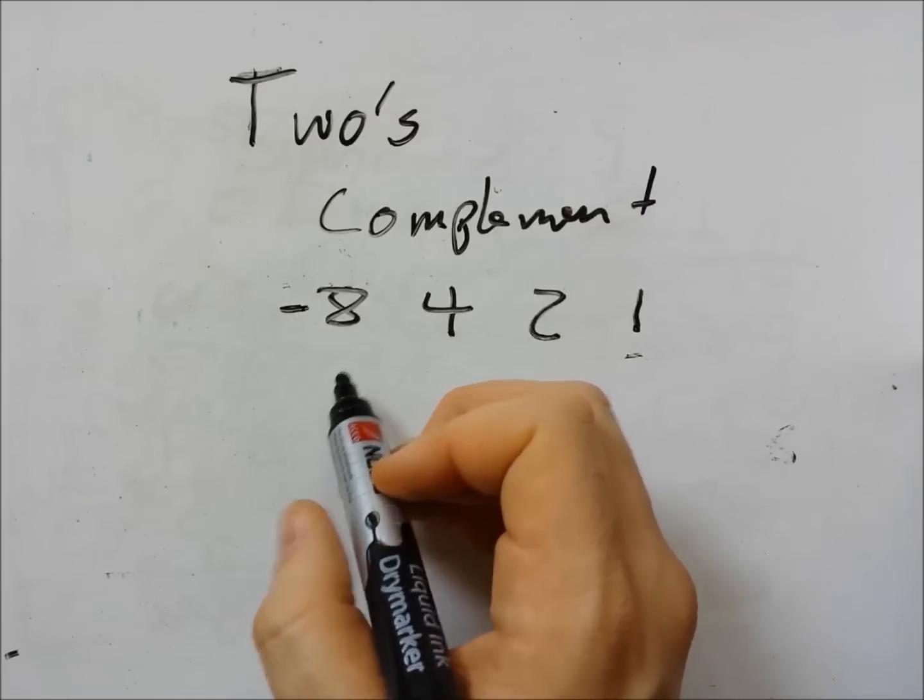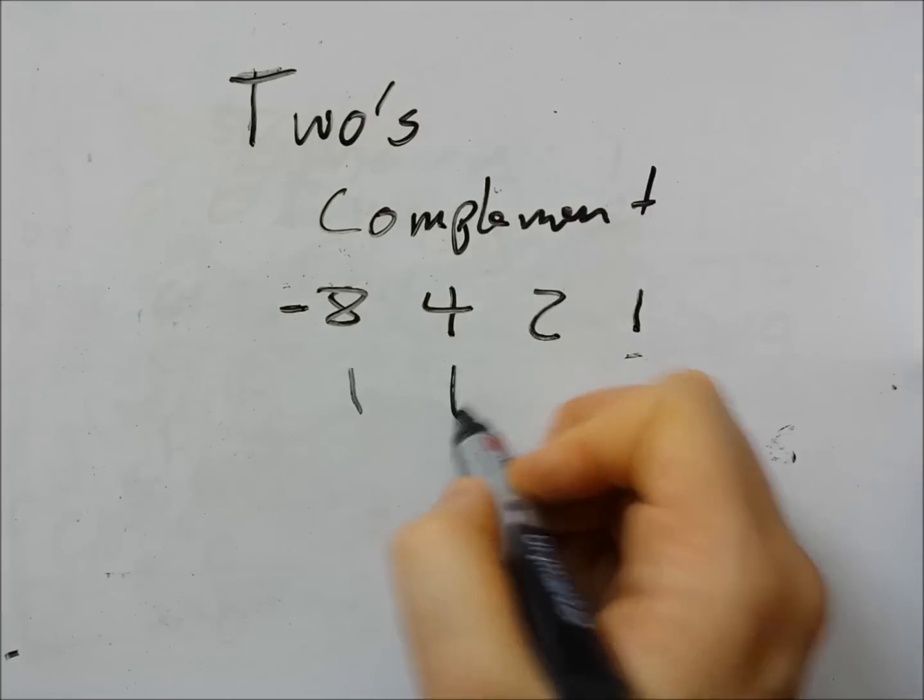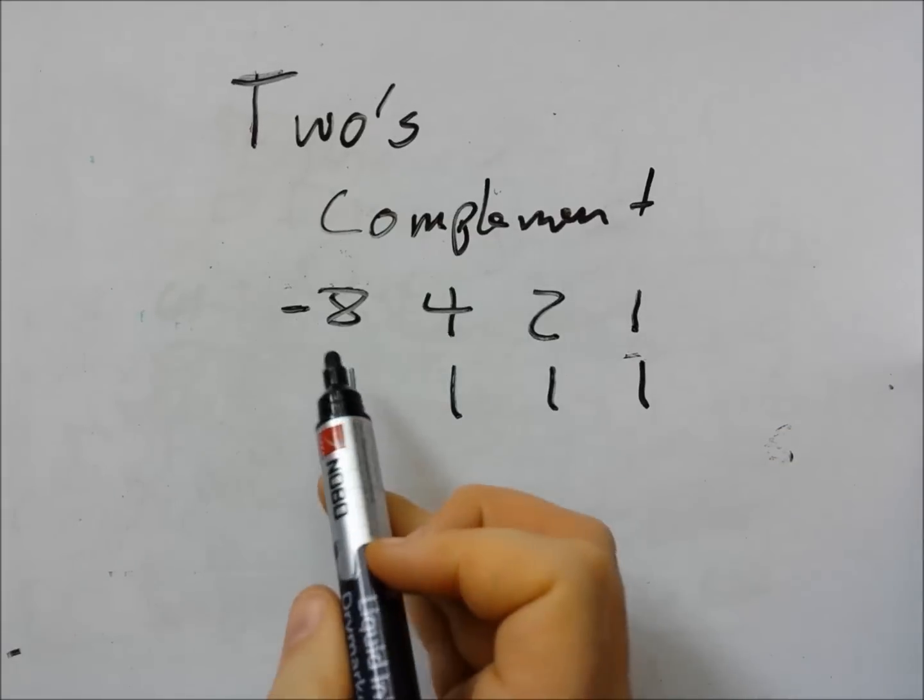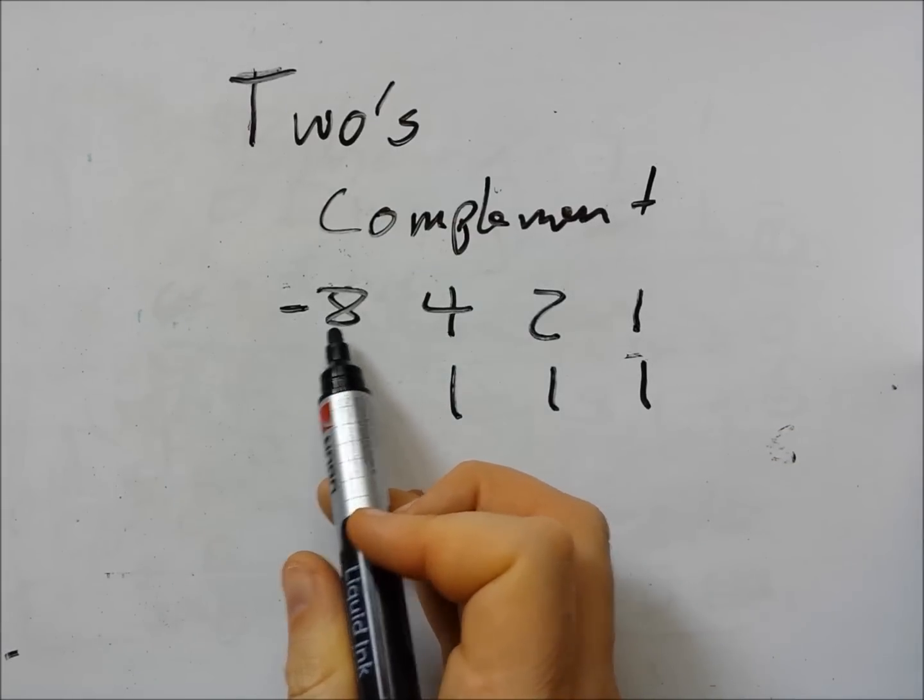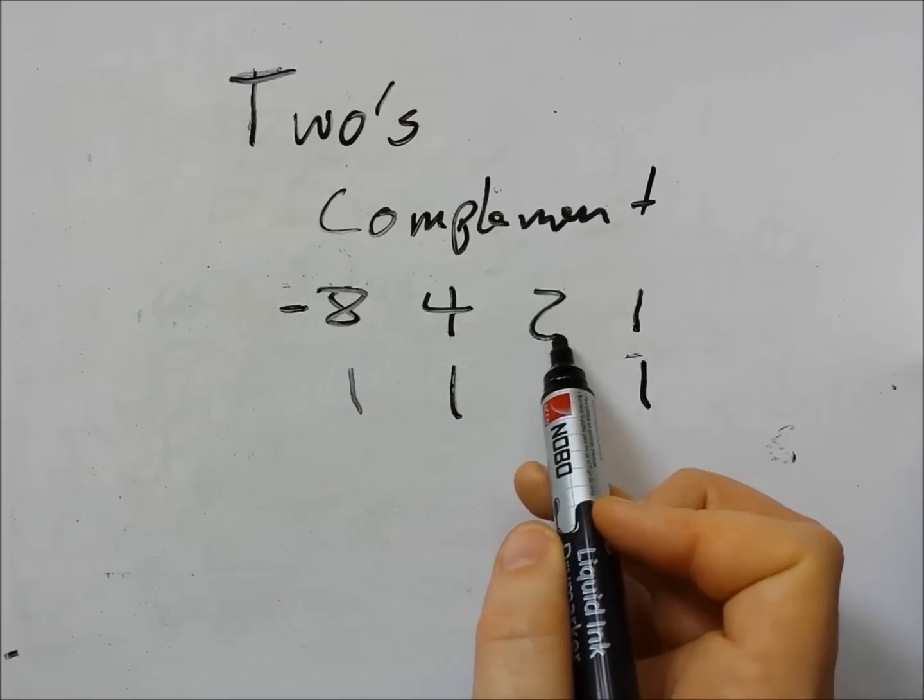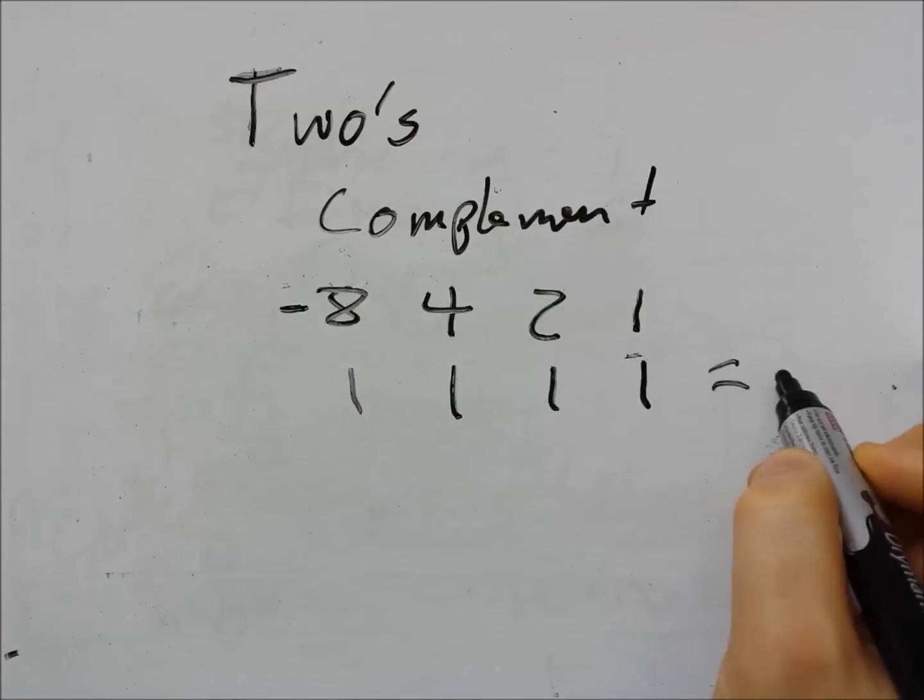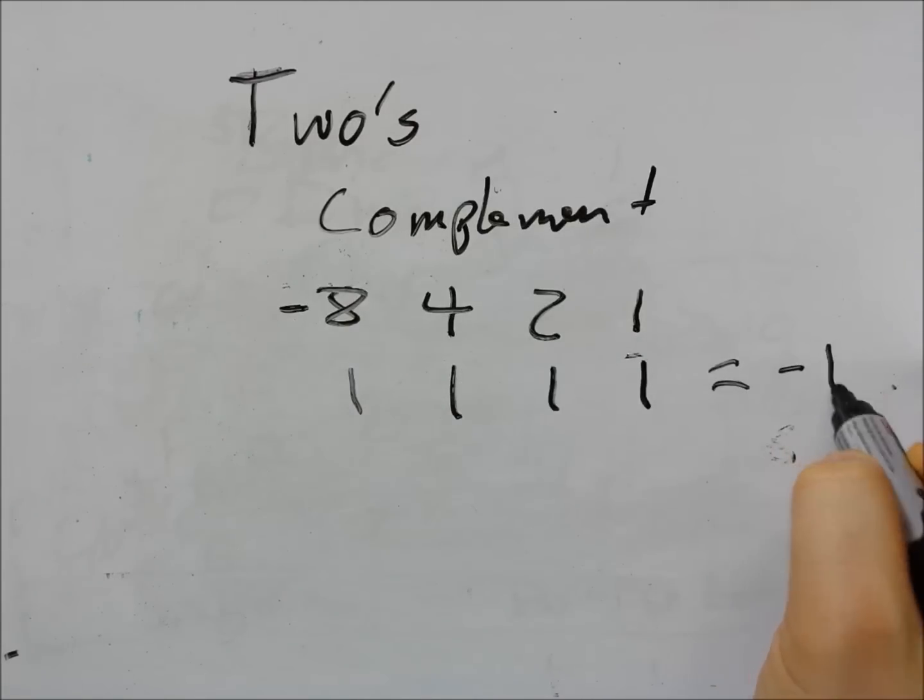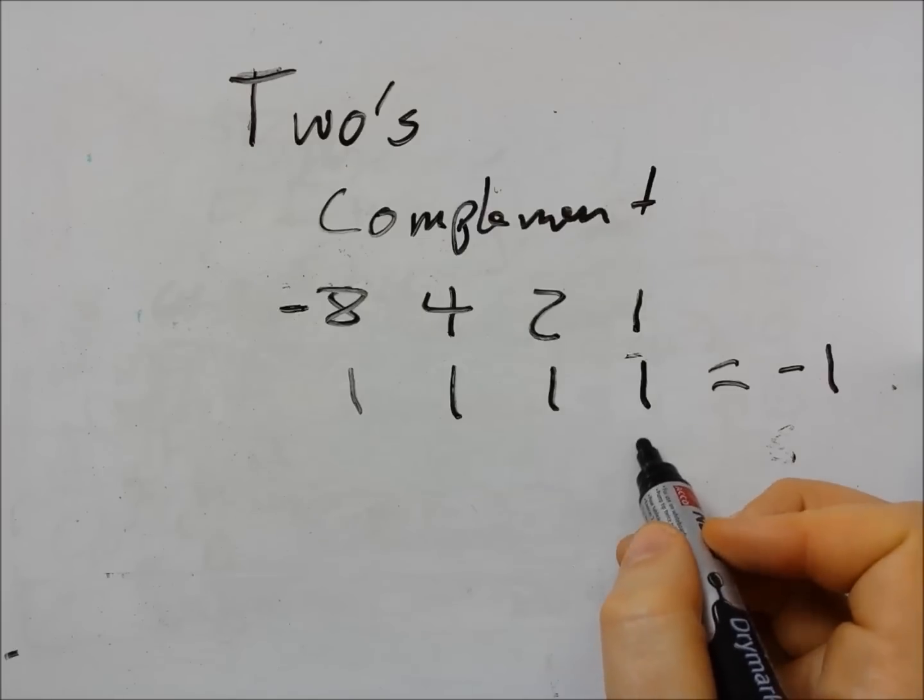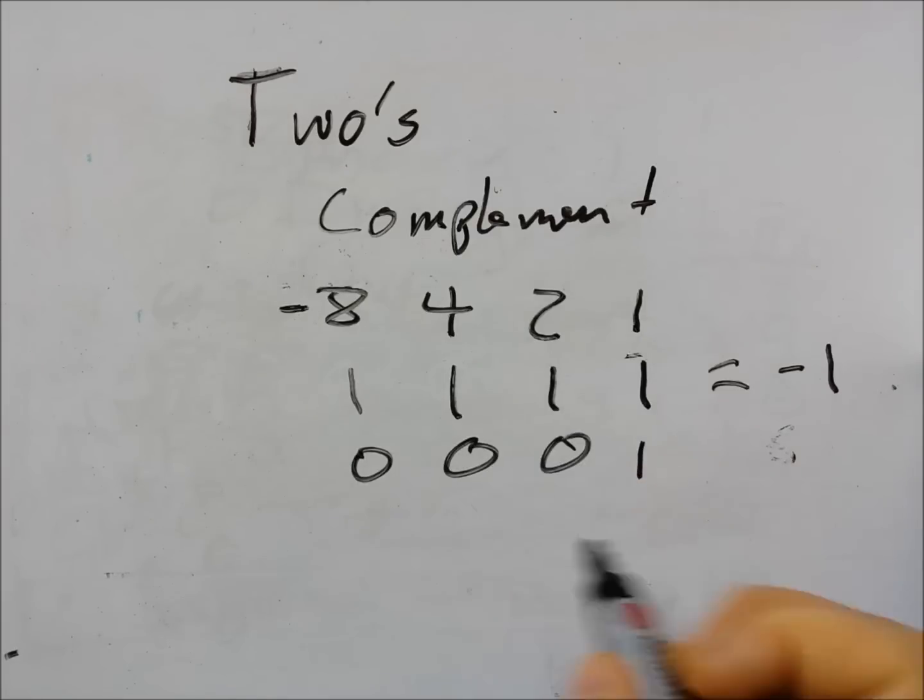What we can say is if we get this number one one one one so minus eight plus four plus two plus one is equal to minus one. We add one to minus one. We add one onto it. So we add one zero zero zero one.